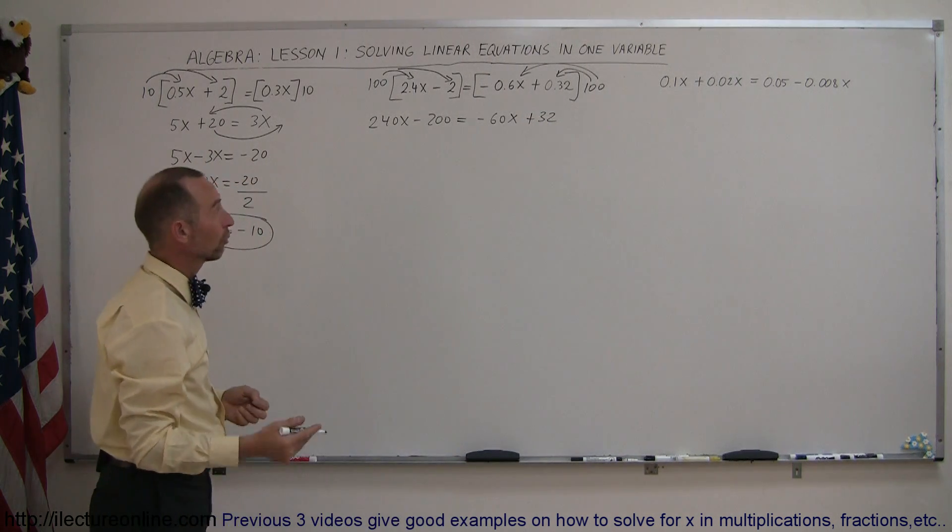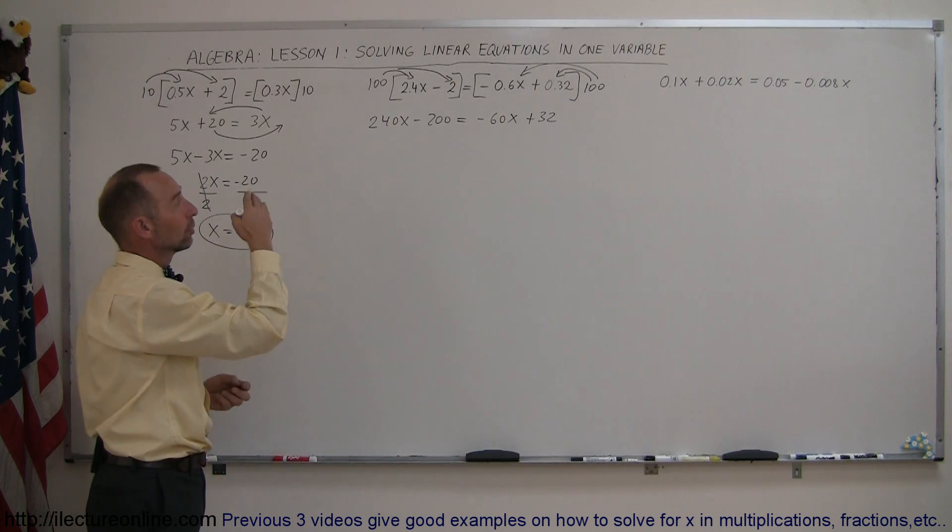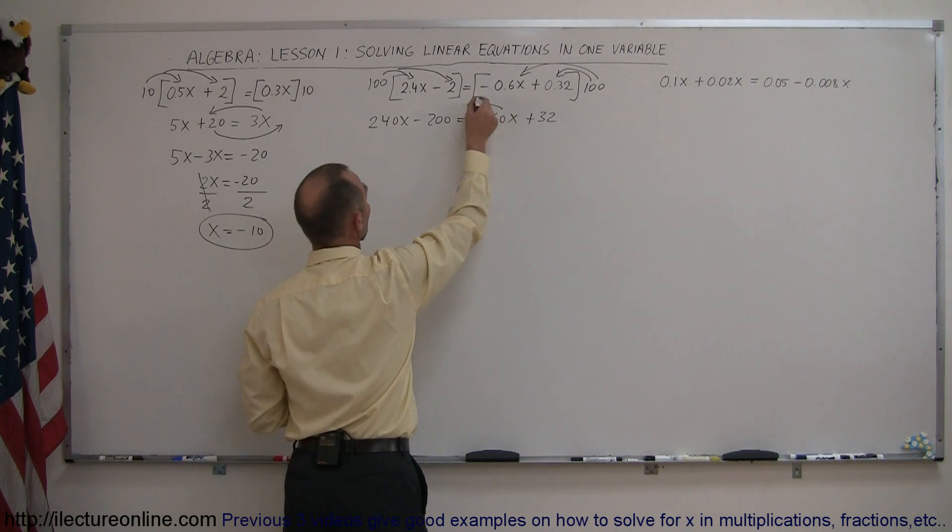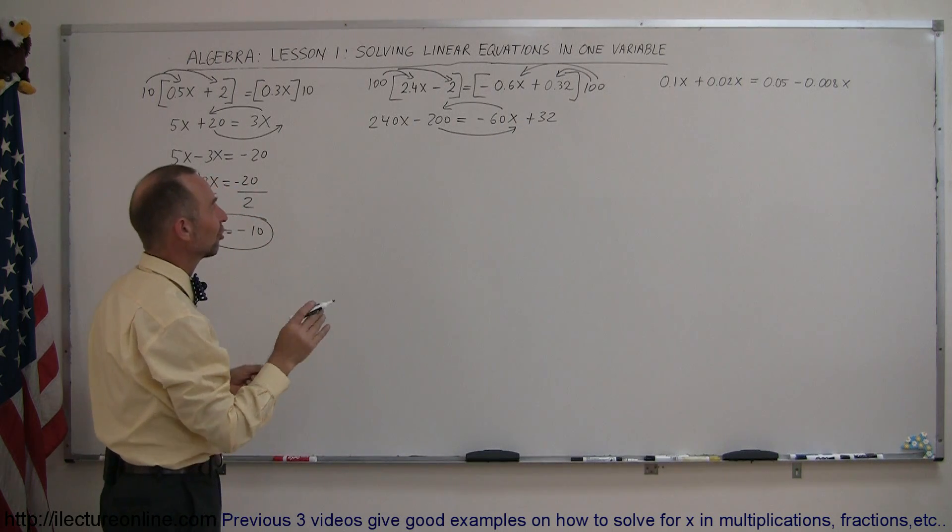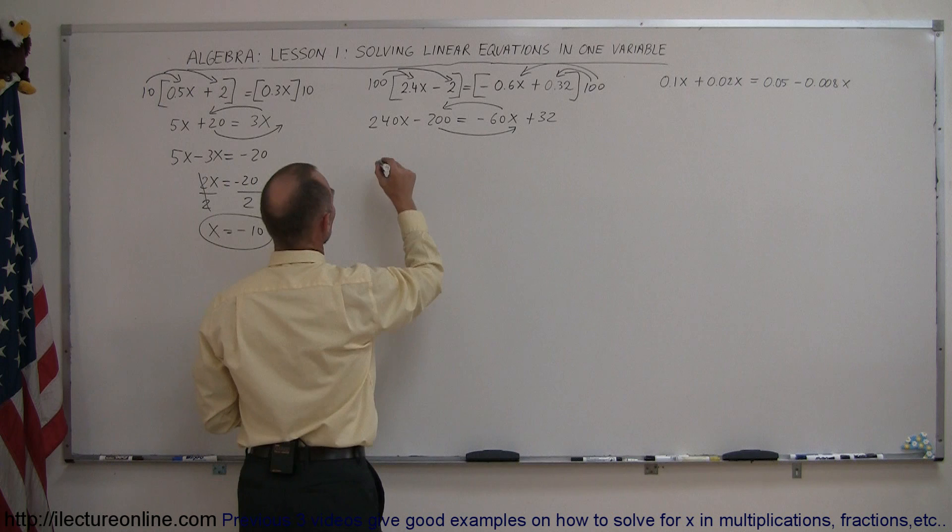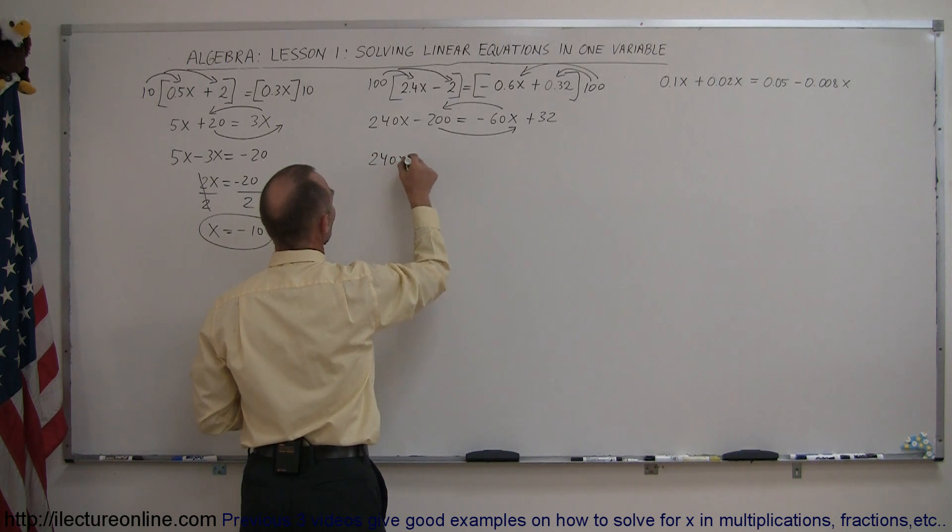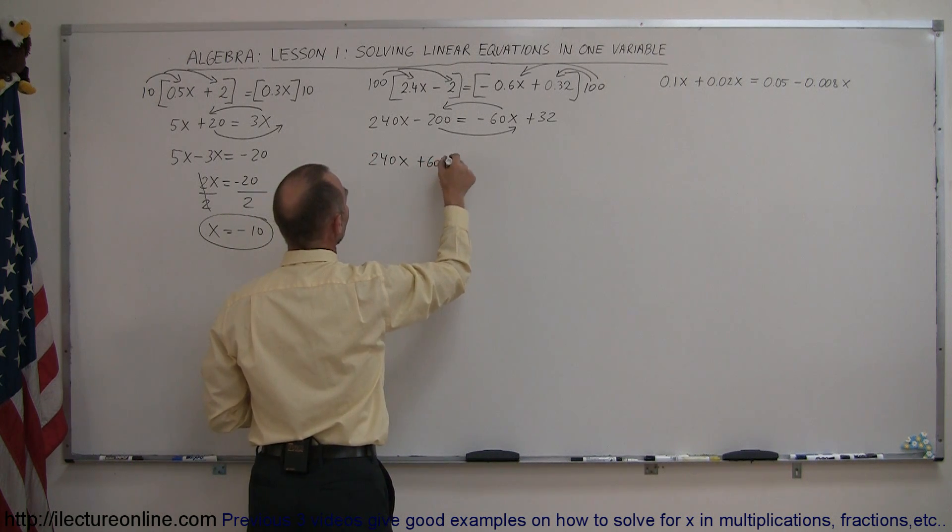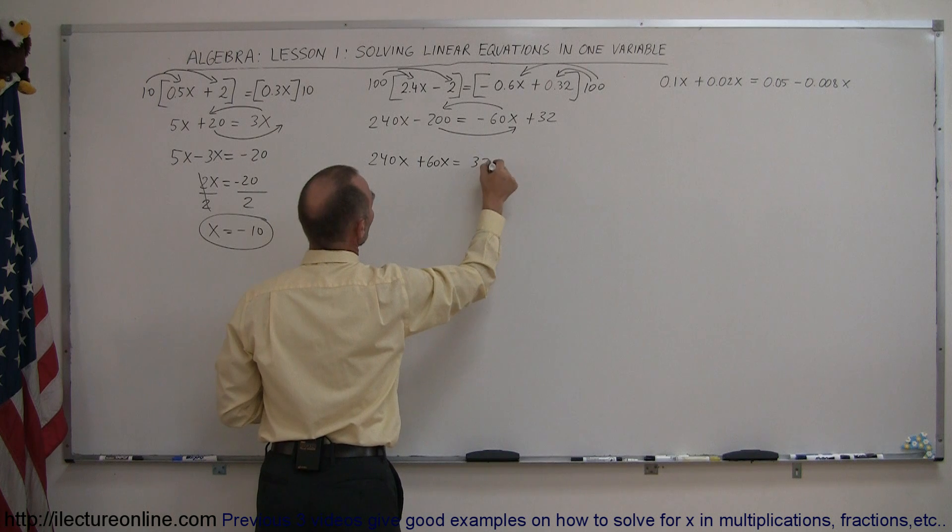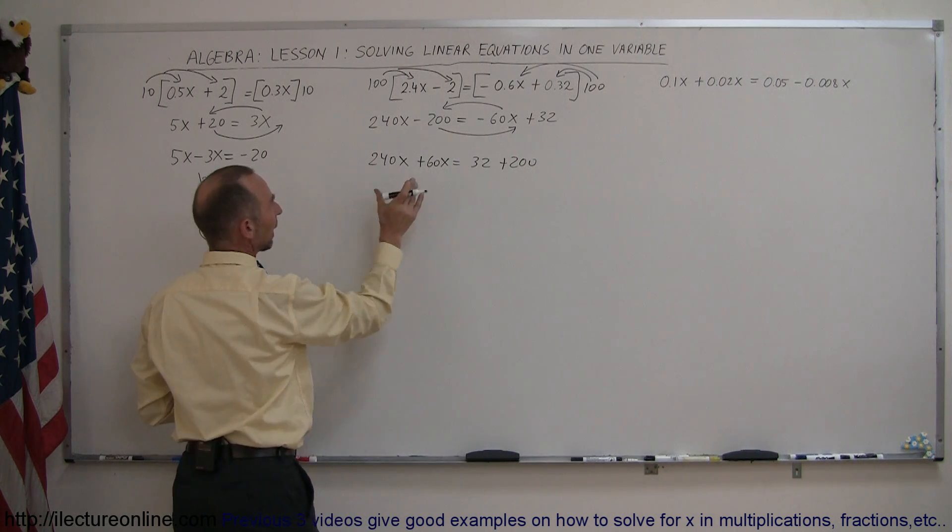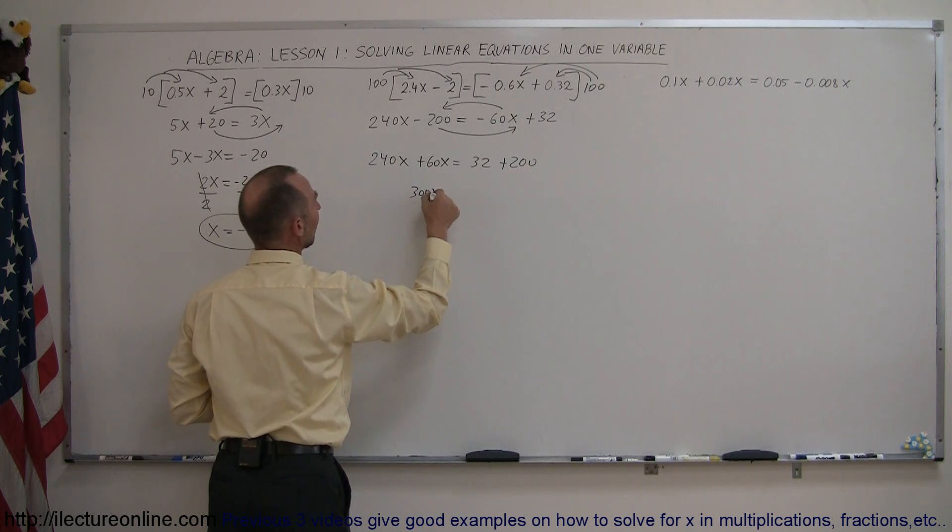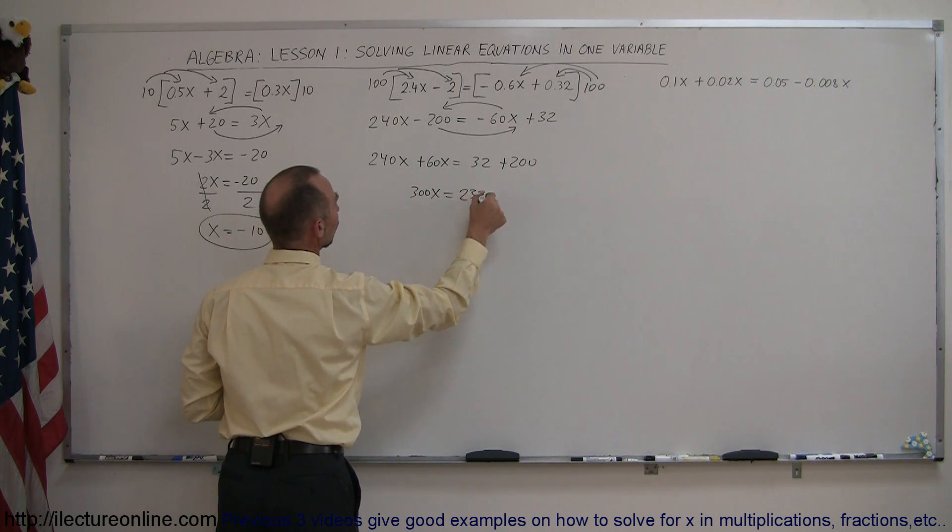Now the next step is to move all the terms with the x to the left side, all the terms without the x to the right, so this moves to the left, this moves to the right. Again, remember when you cross the equal sign, you have to change the sign of the terms, so this becomes 240x plus 60x equals 32 plus 200. Combining like terms on both sides.